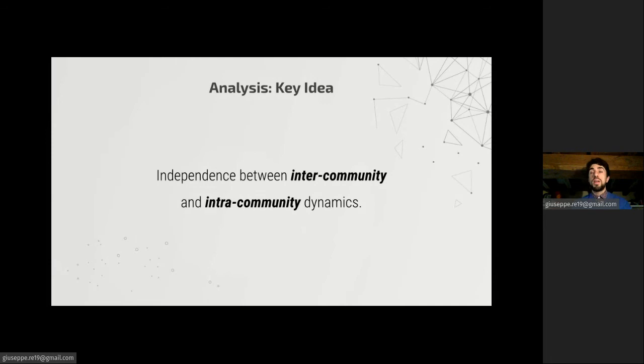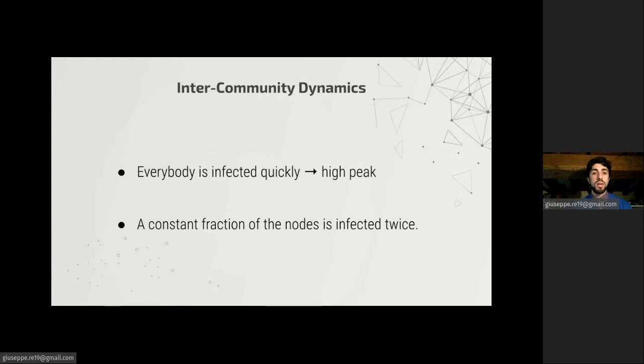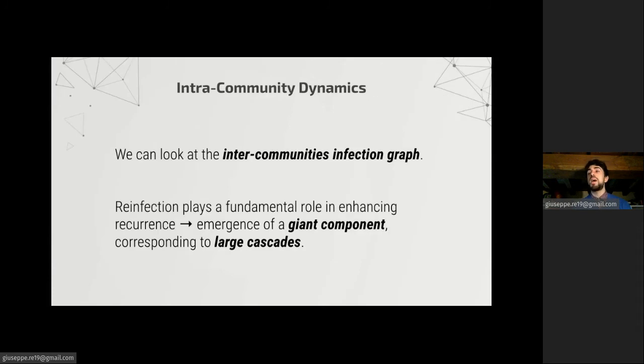The key idea behind the theoretical analysis is to separate somehow the analysis of what happens within a single community and between all the communities. So it's somehow treating independently inter-community and intra-community dynamics. What happens in a single community when the infection starts, everybody gets infected quickly and this gives a high peak. Moreover, a constant fraction of the nodes is infected twice, and we can see that this gives the extra strength to the infection, thanks to which it can become large.